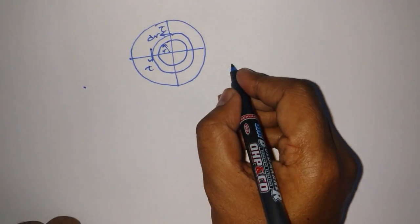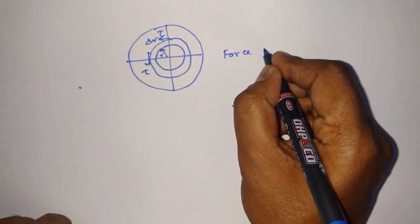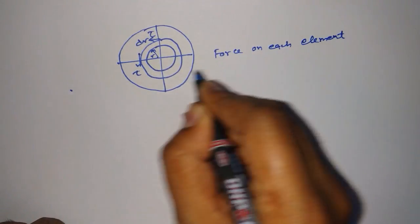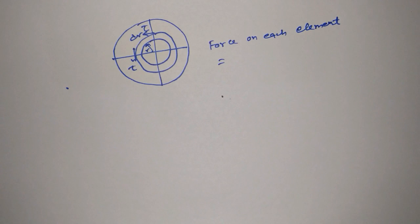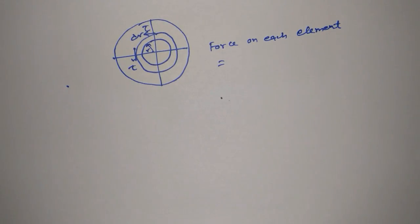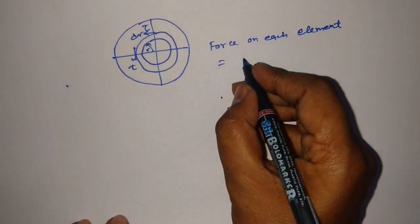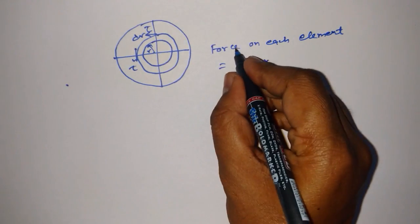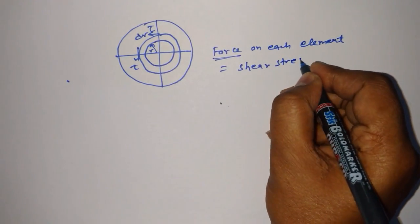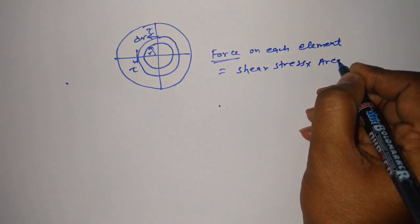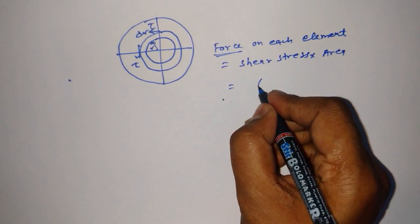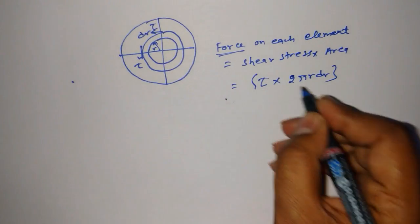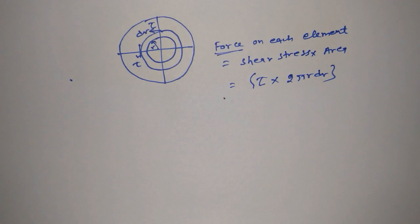Now, the force on each element — since stress equals force divided by area — the force here is based on the shear stress. We know that stress equals force divided by area, so force equals shear stress times area. The shear stress is tau, and the area of this elemental ring is 2·pi·r·dr. Approximately, this is the area of the element.